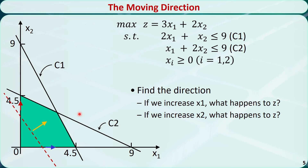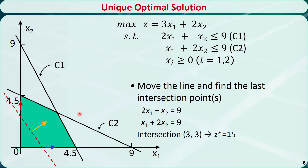Now let's move this line in parallel towards the top right corner. We find that the last intersection before we leave the feasible region is this point. After this point, the line will no longer intersect with the feasible region. It is the intersection of two constraints: 2x1 + x2 = 9 and x1 + 2x2 = 9. The point is (3, 3). Plugging these values into the objective function gives z* = 15. This is the unique optimal solution to this problem.